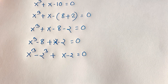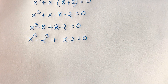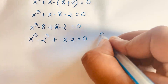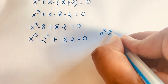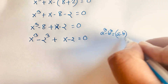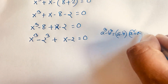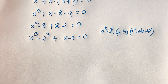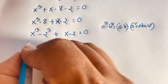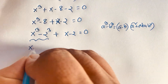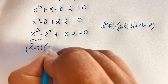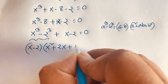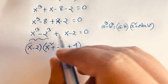One of the algebraic rules: a cubed minus b cubed equals (a minus b) times (a squared plus ab plus b squared). According to this law, I can see easily this expression will be (x minus 2) times (x squared plus 2x plus 4), because b is 2, so b squared is 4.